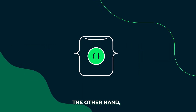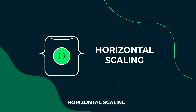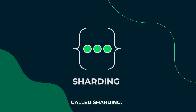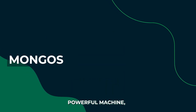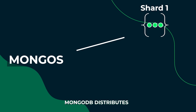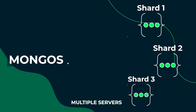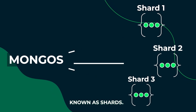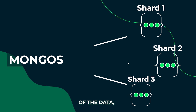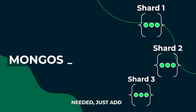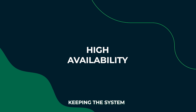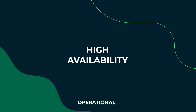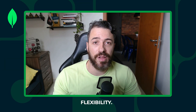MongoDB, on the other hand, is built for horizontal scaling using a technique called sharding. So instead of relying on a single powerful machine, MongoDB distributes data across multiple servers known as shards. Each shard stores part of the data, and if more capacity is needed, just add more servers. This ensures high availability, keeping the system operational even if some shards fail. And of course, there's flexibility.